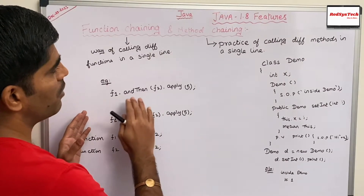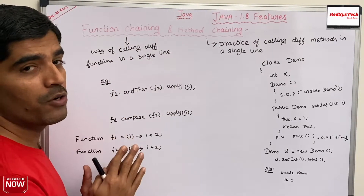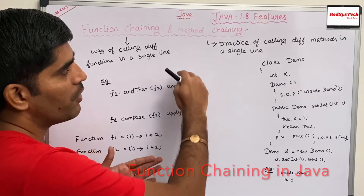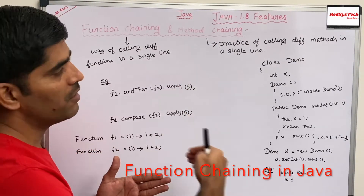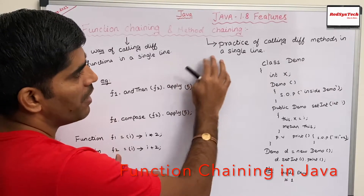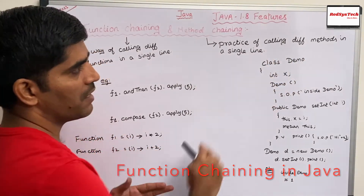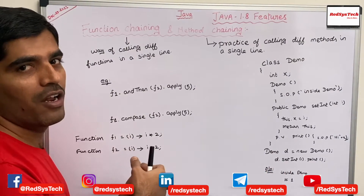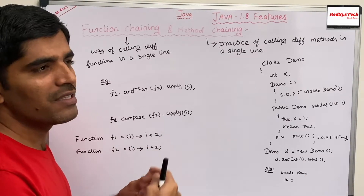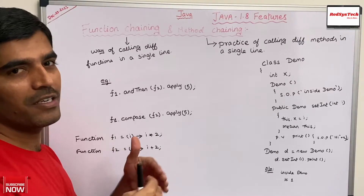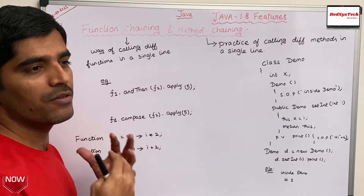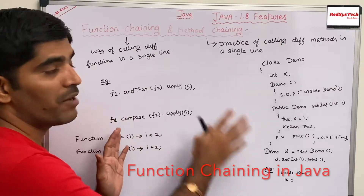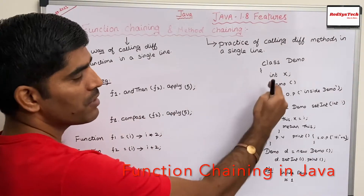We are going to talk about method chaining and function chaining. Chaining means one after the other, and method chaining means calling one method after another. It is a way of calling different methods in a single line. Instead of calling a method, storing the output in a variable, and then calling another method on that variable, you can write it more concisely by calling different methods in a single line.